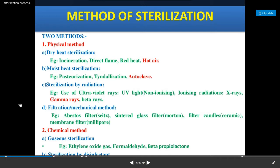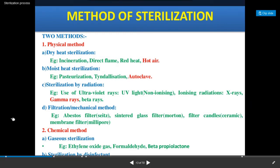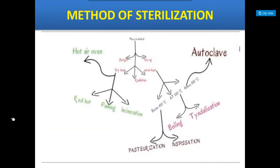The second main method is chemical methods, which include gaseous sterilization — examples are ethylene oxide, formaldehyde, and beta-propiolactone. The second type of chemical method is sterilization by disinfectants or chemicals, and it includes alcohols and aldehydes, phenols and halogens, oxidizing agents, as well as salts. These are the main methods of sterilization.